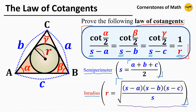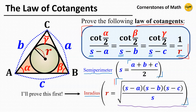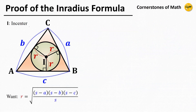Now, this expression for the in-radius is just as interesting as the law of cotangents itself. So I am going to prove the in-radius formula first, and then prove the law of cotangents. All right, so first, let's prove the in-radius formula.